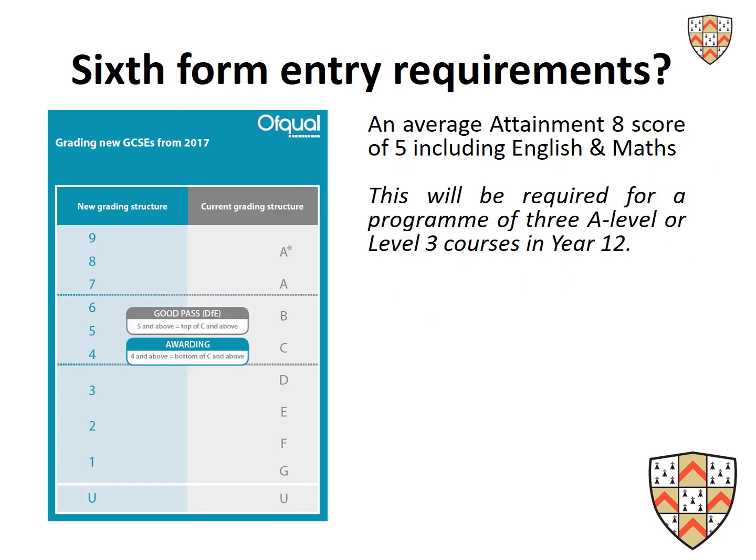Sixth form entry requirements: an average Attainment 8 score of 5, including English and Maths, is needed to access 3 A-level or equivalent courses. An average Attainment 8 score means they add up their 8 best GCSEs, including English and Maths, divide by 8 to produce a score. This has to be 5 or above to access 3 or more Level 3 courses.